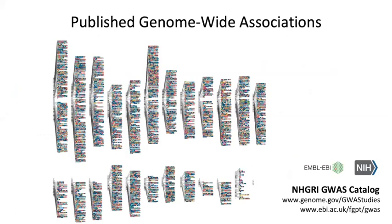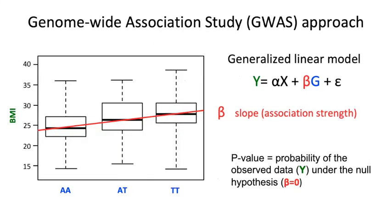We know that in the last 10 years, genome-wide association studies have become the standard tool to identify genetic variants associated with complex traits, and GWAS have successfully identified thousands of variants associated with hundreds of complex traits. What we do with GWAS is to analyze a million variants spread in the genome, and for each variant, we perform a linear model where we test the effect of a SNP on a phenotype.